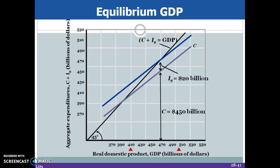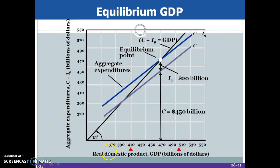Looking at this graphically, we have our 45-degree line. At the 45-degree line, our aggregate expenditures — consumption plus gross investment — are exactly equal to our real domestic product, or GDP. At any point on this line, everything being produced in the economy is being consumed. In this economy, the equilibrium is at 470 billion dollars, where GDP and aggregate expenditures are both equal to 470 billion.